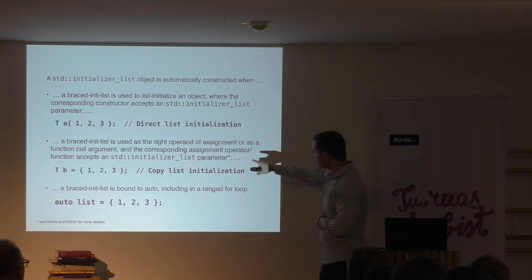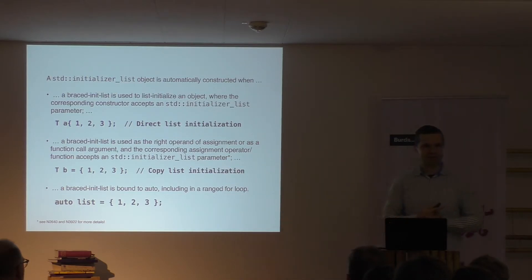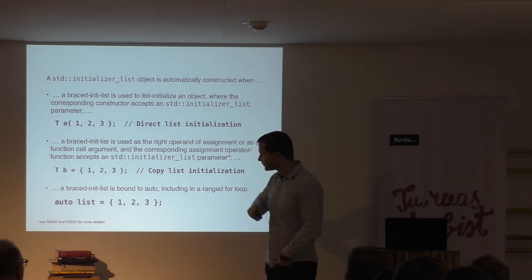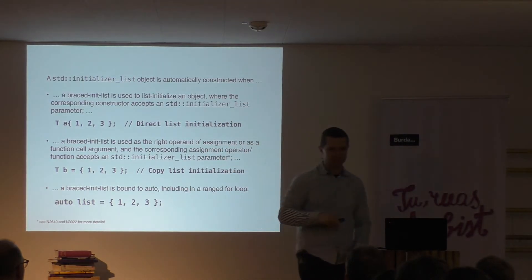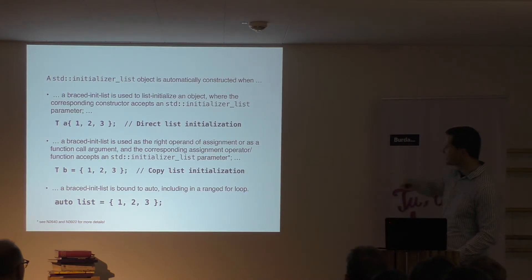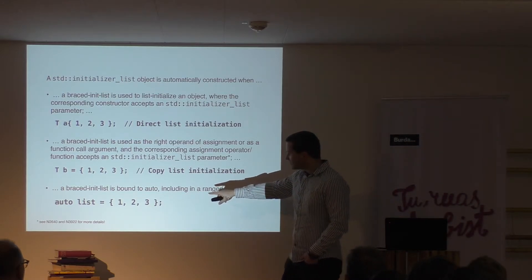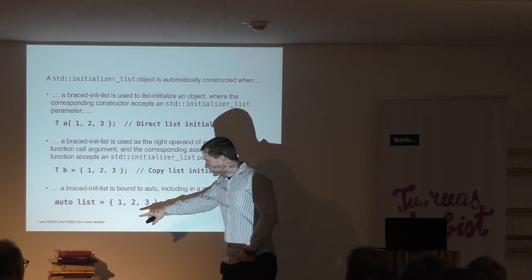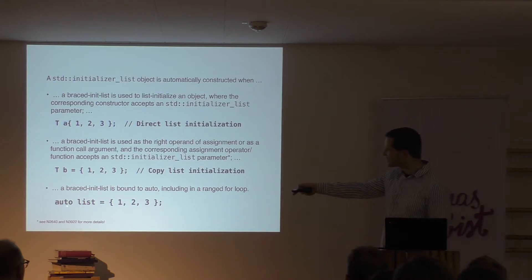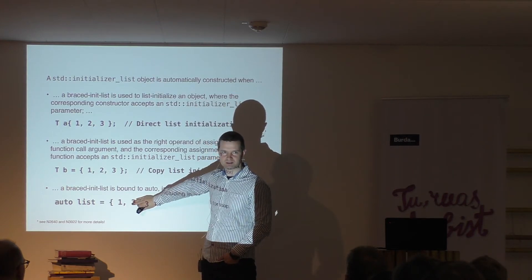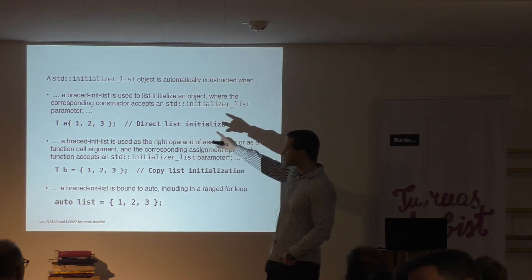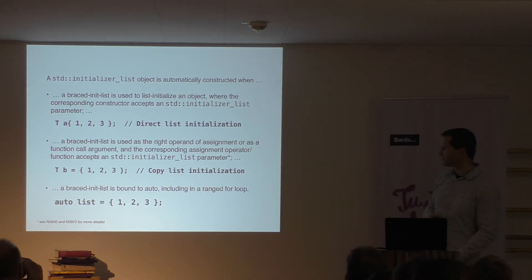Note this little asterisk. There was a paper, N2640, which suggested that using auto with a braced-init-list should be possible. The third form: a braced-init-list is bound to auto, including in a range-based for loop. However, in C++17 this was changed again — if you have only one element, suddenly it's an int, not an initializer list of int. Just remember: these are exactly the three places where you have an initializer list. Everything else is something else.